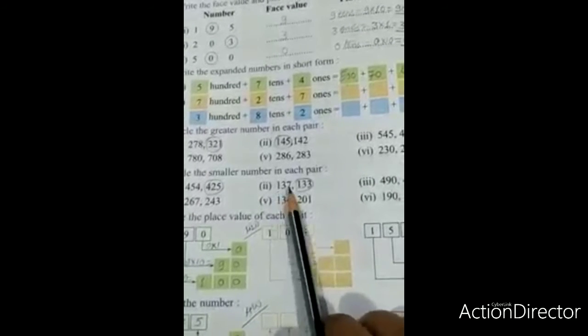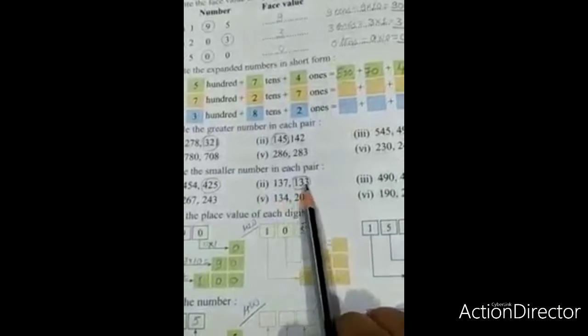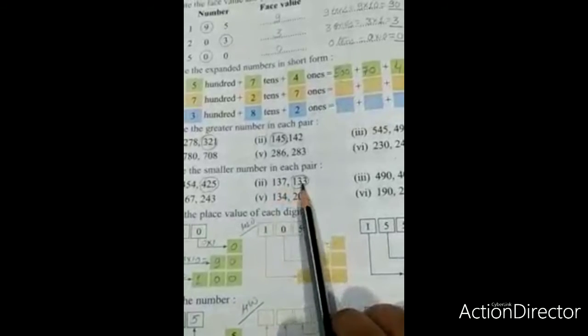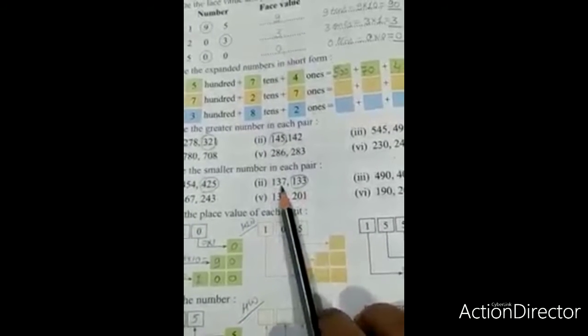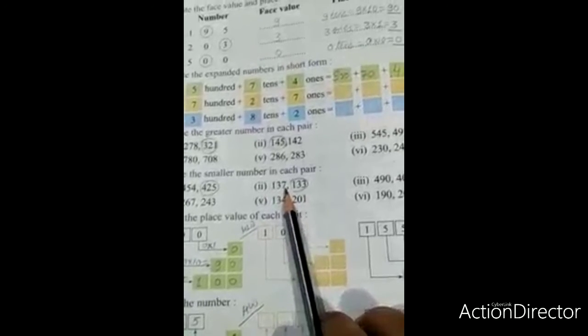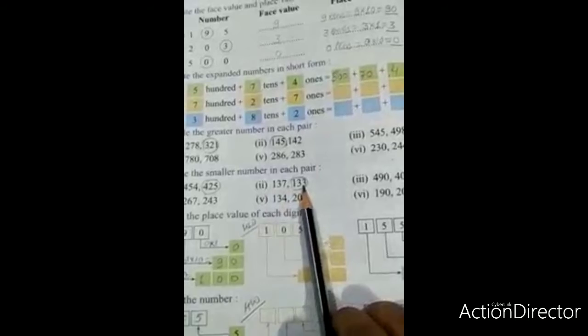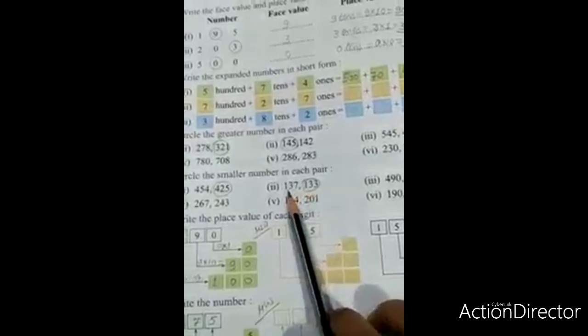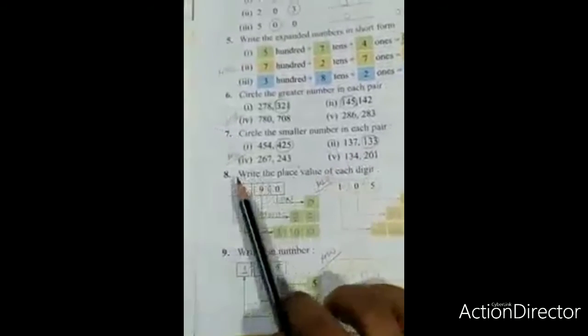Next: 137 and 133. Hundreds and tens - 1, 3 and 1, 3 - equal digits. So we will compare the ones place. In the ones place, here is 7 and here is 3. Which one is smaller? Three. So 133 is smaller than 137. Circle 133.